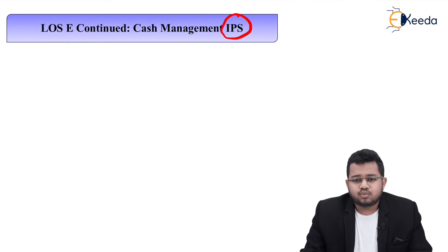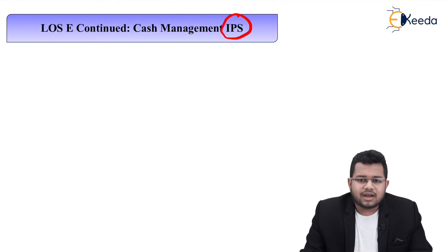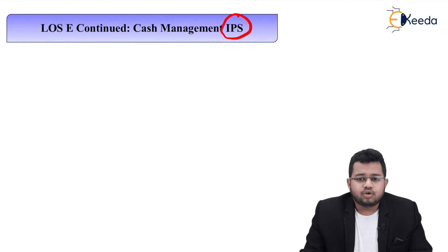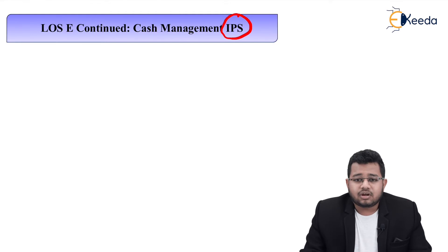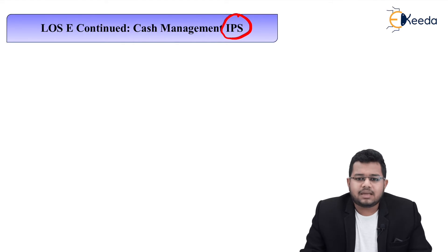Let's say you are an advisor or you are a portfolio manager. You and your client will have some agreement — you need to know your client. You will jot down your client's needs, your client's objectives, your client's constraints, everything in this statement called IPS.